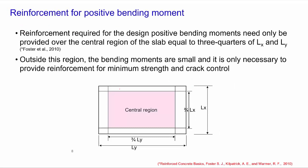Once the maximum positive moment is found, calculate the area of reinforcement required for x and y directions. The spacing is found using Ab over AST, where AST is the required area from the moment calculation for the x direction and Ab is the cross-sectional area of one bar. This applies similarly for the positive y direction moment as well.